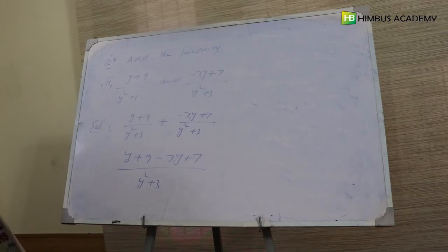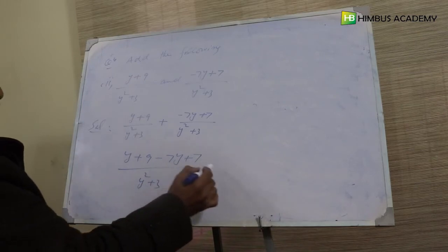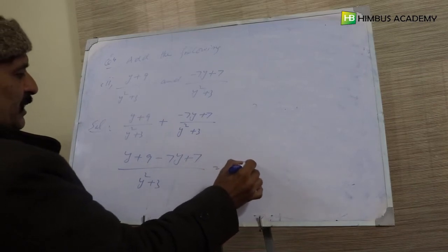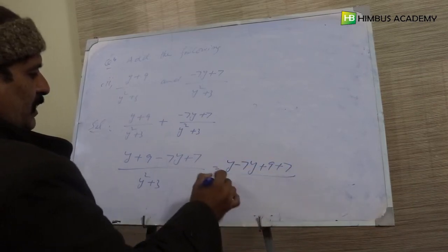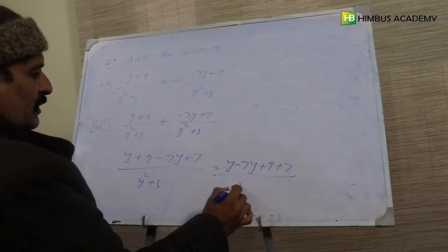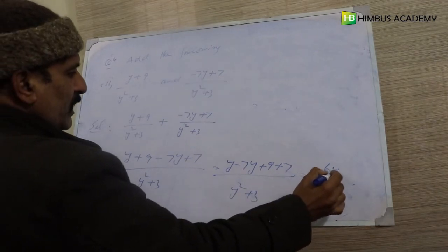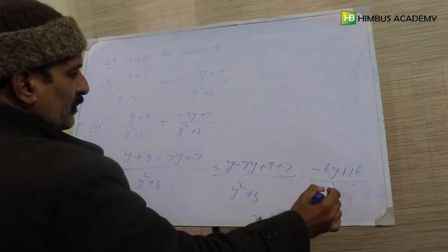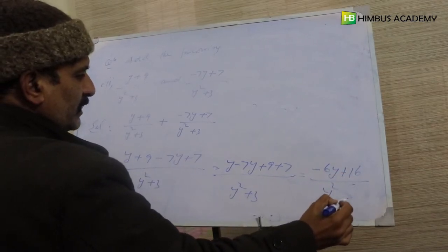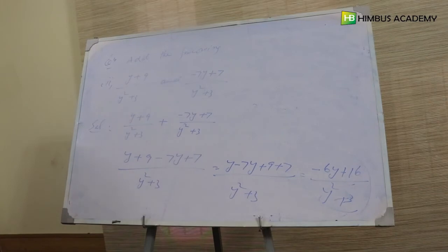Ab numerator mein kya raha? y minus seven y plus nine plus seven, jo hai y square plus three ke upar. Isse minus six y plus sixteen over y square plus three milta hai. Yeh is second part ka answer hai.